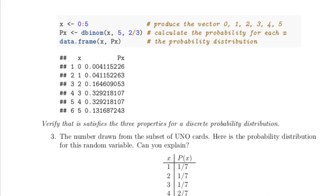When we spin the spinner five times, each time we might get a four or we might not. So we might get zero fours, one four, two fours, three fours, four fours, or five fours. The values of the random variable are 0, 1, 2, 3, 4, 5. This is a binomial distribution, so we calculate the probability of each value using dbinom, which can work on the entire vector and find all probabilities at once, saved in a vector called Px.